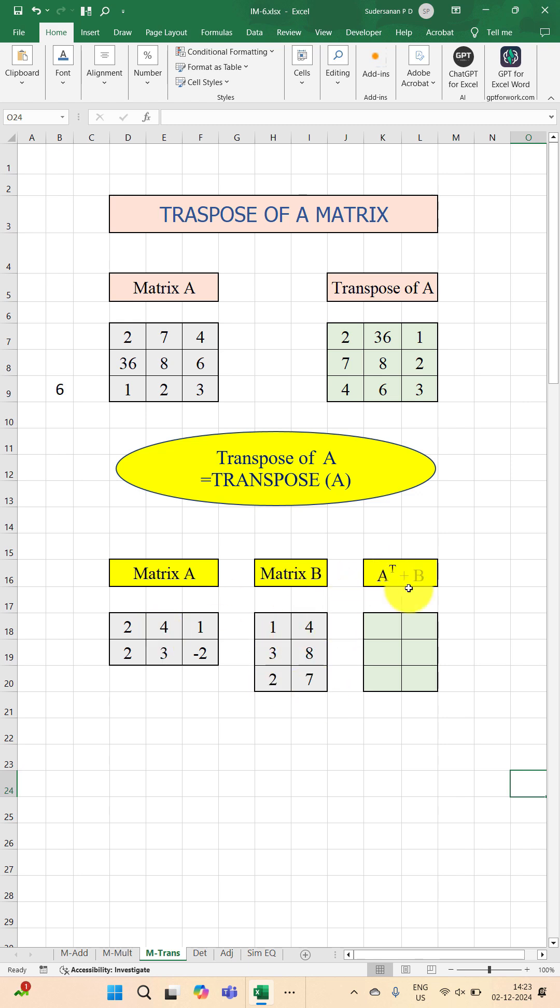When you take the transpose of A, you will have a 3 by 2 matrix, and Matrix B is also a 3 by 2 matrix, so you can add these two. You can select three rows and two columns.